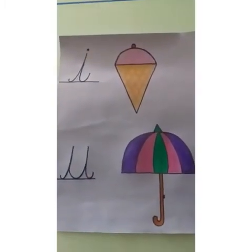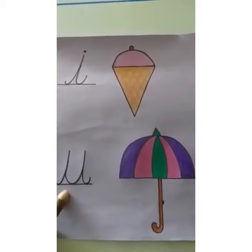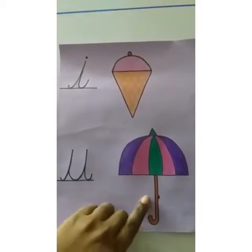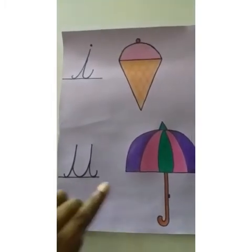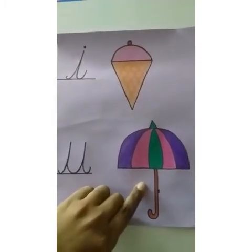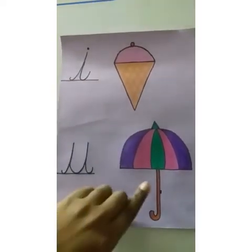And which was the next letter? Can you guess this letter? U. U for an umbrella. Once again, U for an umbrella. I for ice cream. U for umbrella.